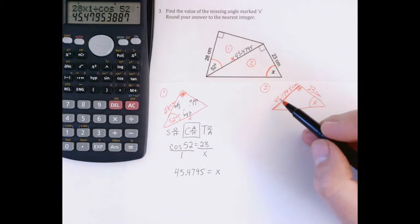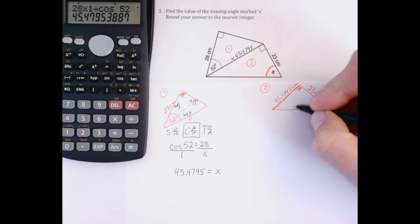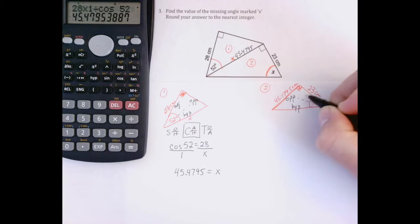Now I'm going to kind of forget about triangle number one. We're only in triangle number two now. I'm looking for this angle here. So I'm going to label the triangle. Across from the 90 degree angle is hypotenuse. Across from the angle I want to work with is my opposite side. And the third side is adjacent.